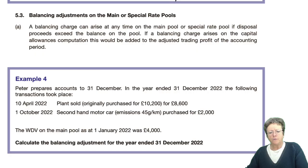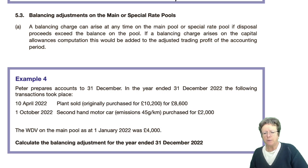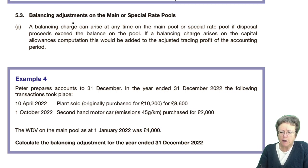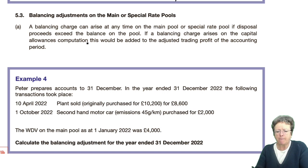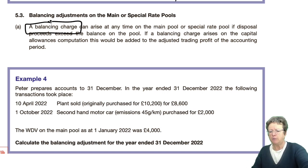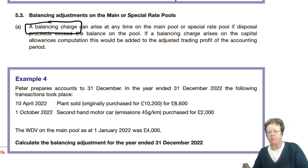Section 5.3: balancing adjustments on the main and special rate pools. A charge can arise at any time on the main pool if the disposal proceeds exceeds the balance in the pool.